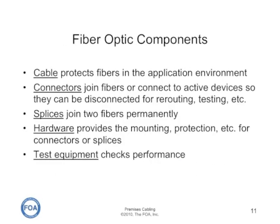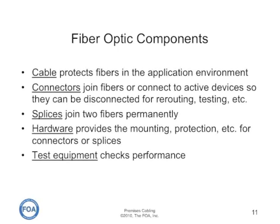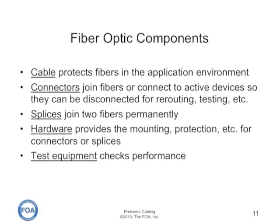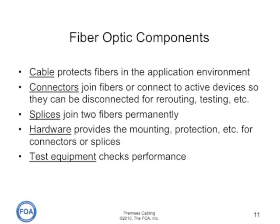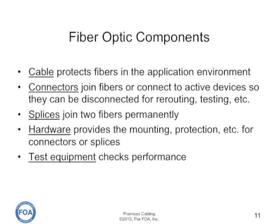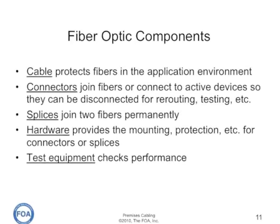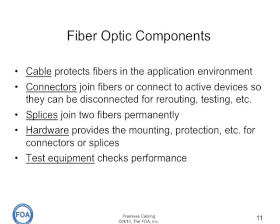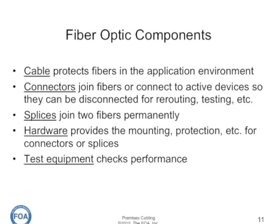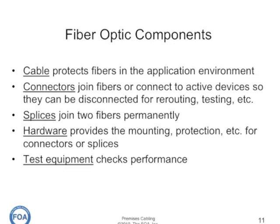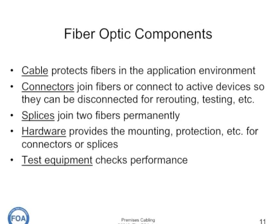A fiber optic cable plant consists of a number of components: a cable which protects the fibers in the application environment; connectors which join fiber or connect to active devices so they can be disconnected in the future for rerouting or testing; splices which join two fibers permanently; hardware that provides the mounting and protection for the connectors, splices, and cables; and test equipment which checks the performance of the complete installed link.